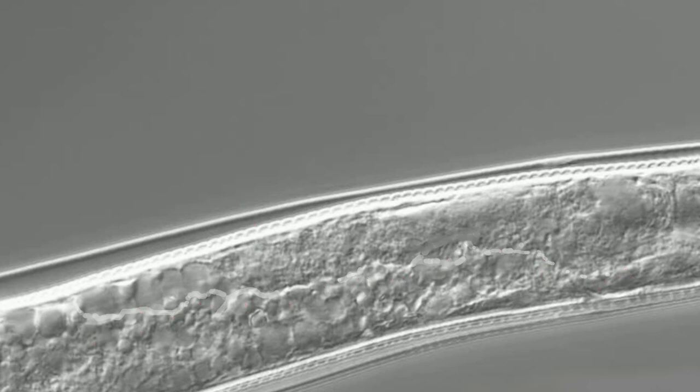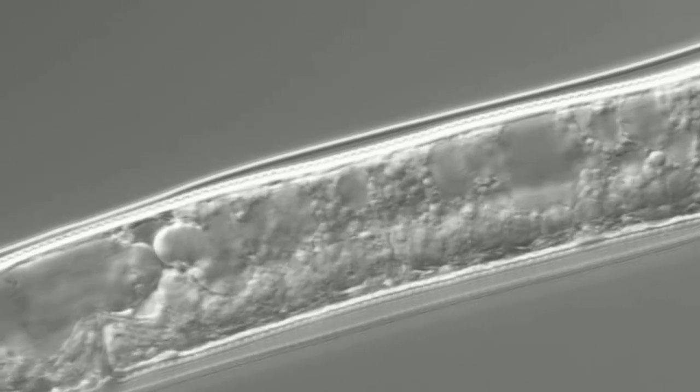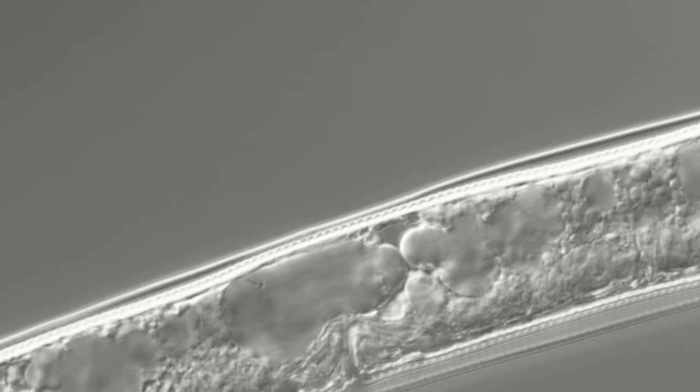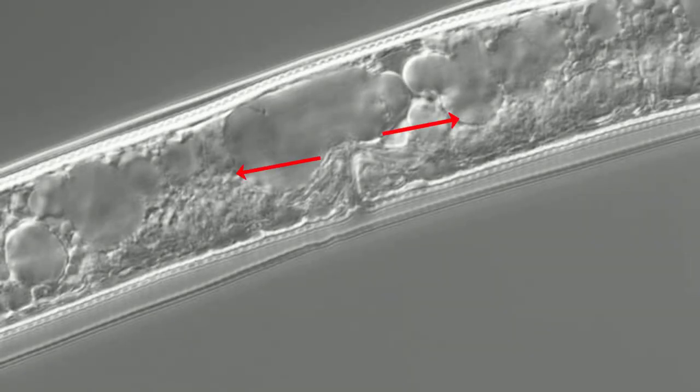As we continue moving posteriorly, we come across the anterior branch of the female reproductive system. This reproductive system is didelpic, with two branches that stretch to both the anterior and posterior sides of the nematode respectively. Right now we are seeing the vulva of this nematode, which is located at around 50 to 70 percent of the body.